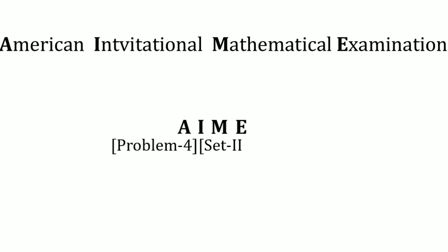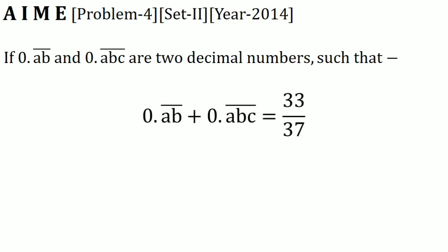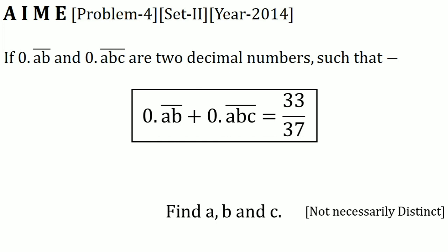This is problem 4 from set 2 of the 2014 American Invitational Mathematical Examination, or AIME. The problem says: if 0.ab̄ and 0.ab̄c̄ are two decimal numbers such that 0.ab̄ plus 0.ab̄c̄ equals 33 divided by 37, find a, b, and c — where a, b, c are not necessarily distinct. Please try the question before watching the solution.